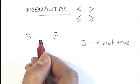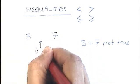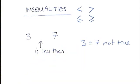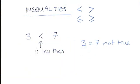If 3 is less than 7, we need a symbol in here which means is less than. The symbol that we're looking for is this one here. 3 is less than 7.